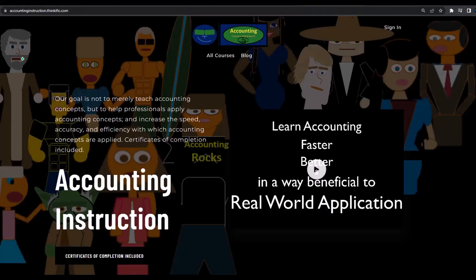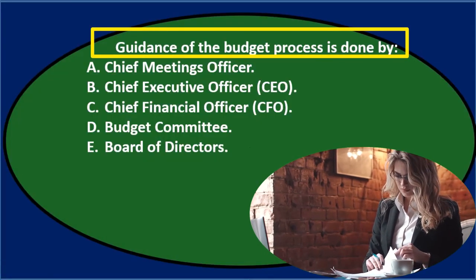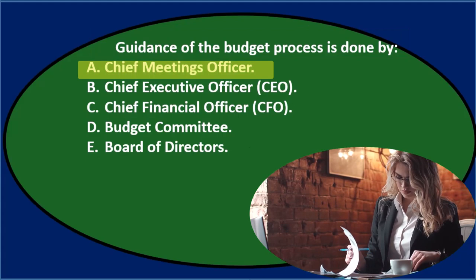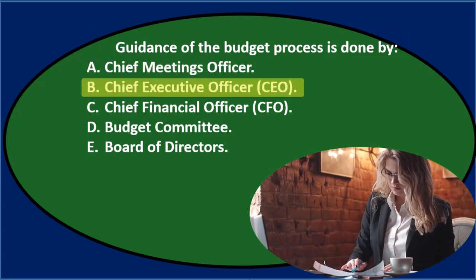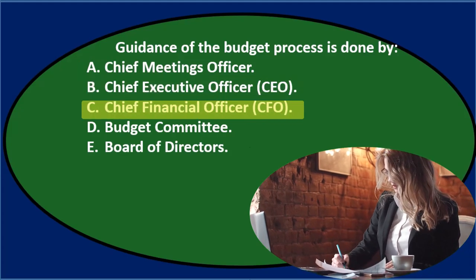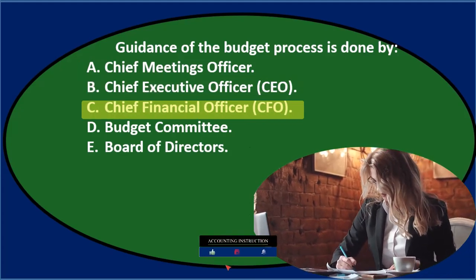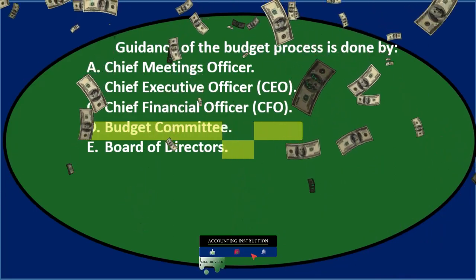If you would like a commercial-free experience, consider subscribing to our website at accountinginstruction.com or accountinginstruction.thinkific.com. First question: Guidance of the budget process is done by — A, Chief Meeting Officer; B, Chief Executive Officer; C, Chief Financial Officer, otherwise known as the CFO; or D, Budget Committee.